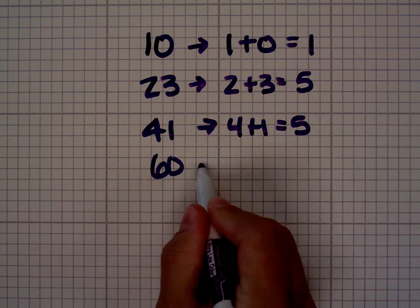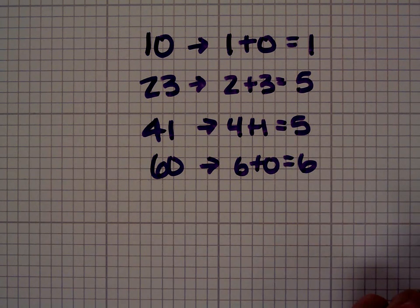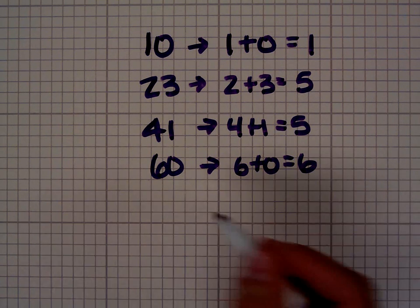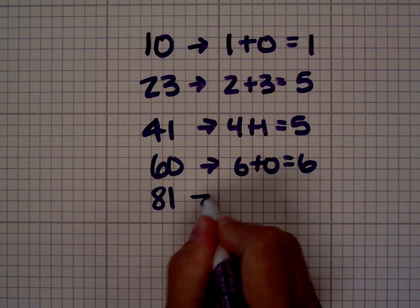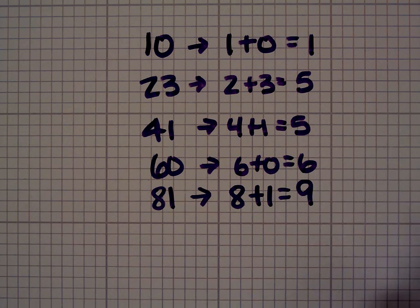Let's take the number 60. 6 plus 0 is 6, so the digital root of 60 is 6. Let's look at the number 81. 8 plus 1 is 9, so the digital root of 81 is 9.